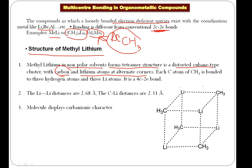In this cubane-type structure, at each corner we have alternating methyl and lithium atoms. Moving around the cube, you take alternate positions — methyl, then lithium, then methyl, then lithium. If we look at one CH3 fragment, it is bonded to lithium on one side, lithium on another side, and lithium on a third side — so one CH3 is in coordination with three metal atoms.